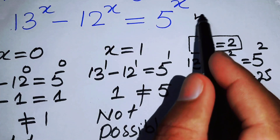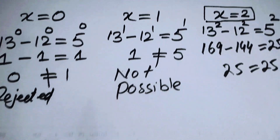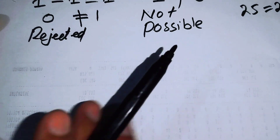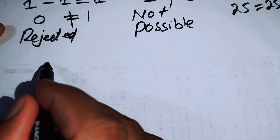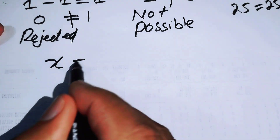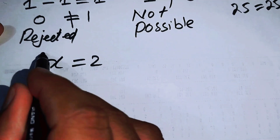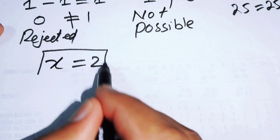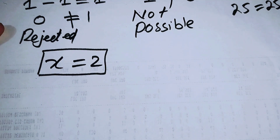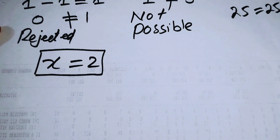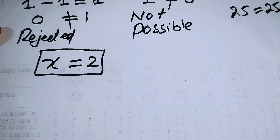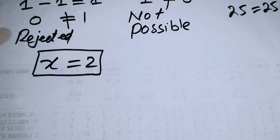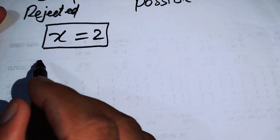So we can say that x equal to 2 is the solution of this equation. I can write that x equal to 2 is the only solution of the given equation. Now I will explain this concept in a different way.